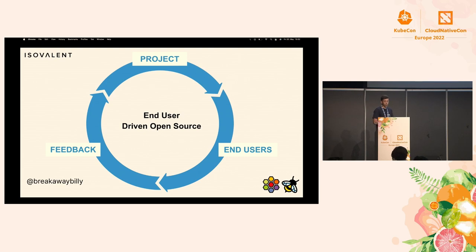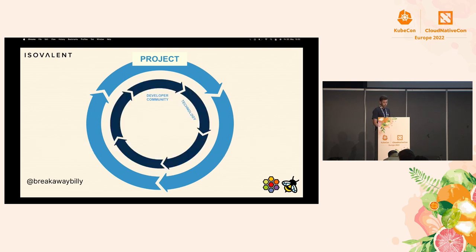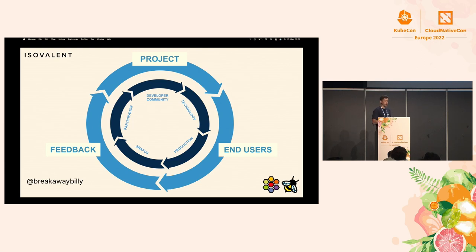In CNCF, when we talk about end-user-driven open source, this is the life cycle we're talking about — where a project has end users using it in production. These end users create feedback, create issues, understand the use cases and edge cases, and feed that back into the project so that we drive the project forward. This creates a virtuous cycle in a single project. The end user puts it in production, has things that wake them up at 3 a.m., and participates through feedback — maybe issues, maybe even a PR — for the things they're looking for.